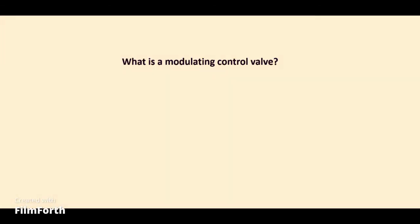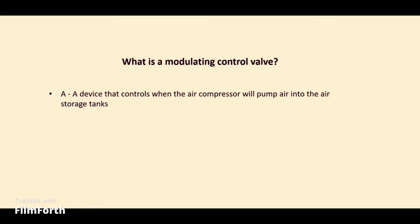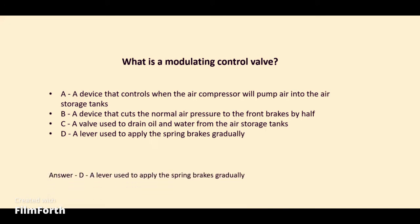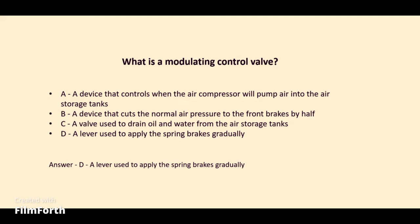What is a modulating control valve? A. A device that controls when the air compressor will pump air into the air storage tanks. B. A device that cuts the normal air pressure to the front brakes by half. C. A valve used to drain oil and water from the air storage tanks. D. A lever used to apply the spring brakes gradually. The answer: D. A lever used to apply the spring brakes gradually.